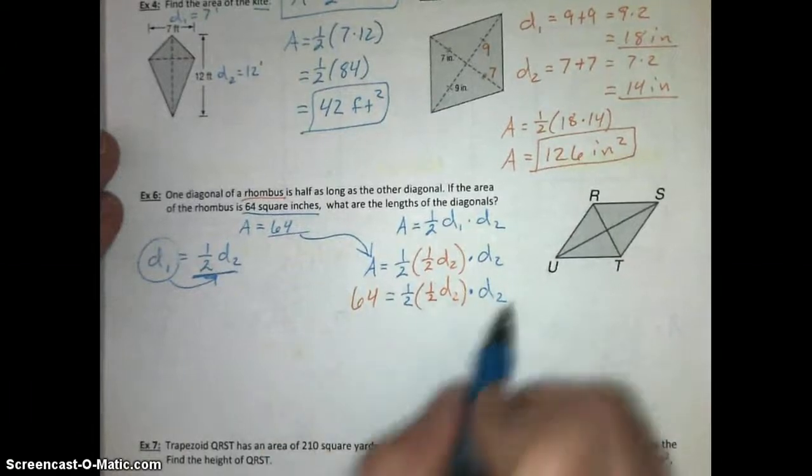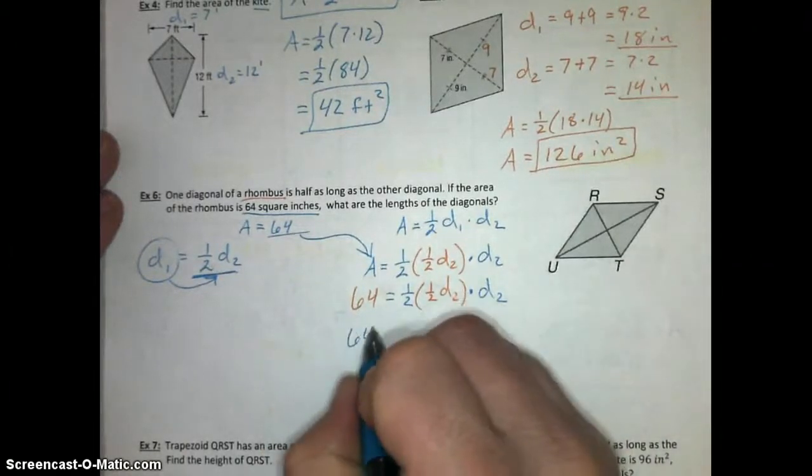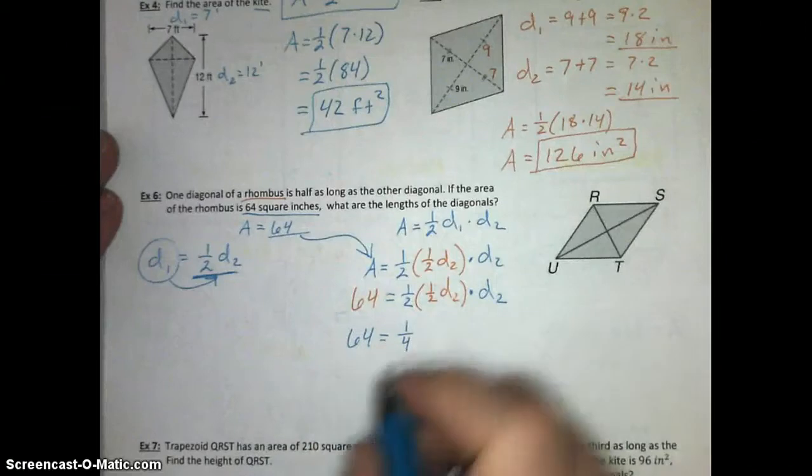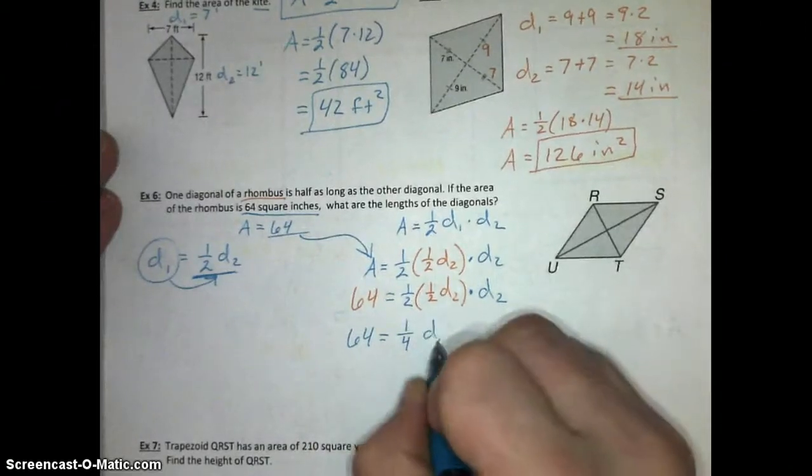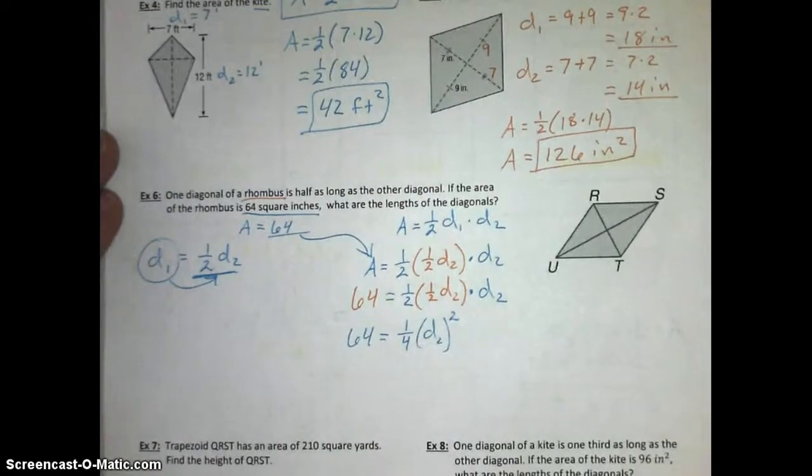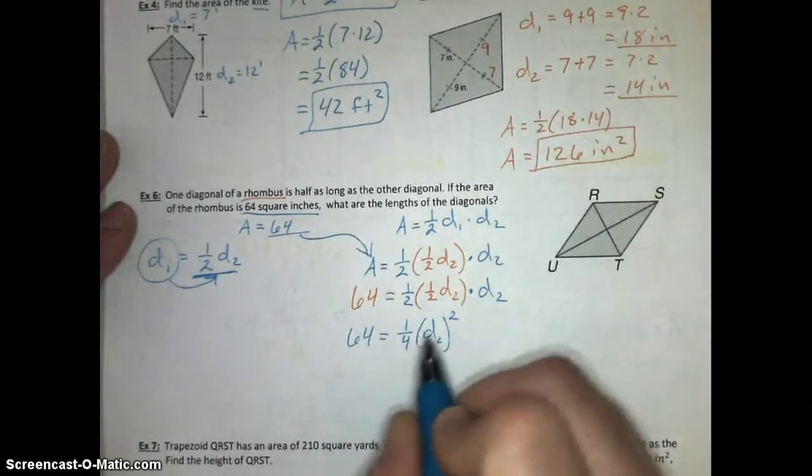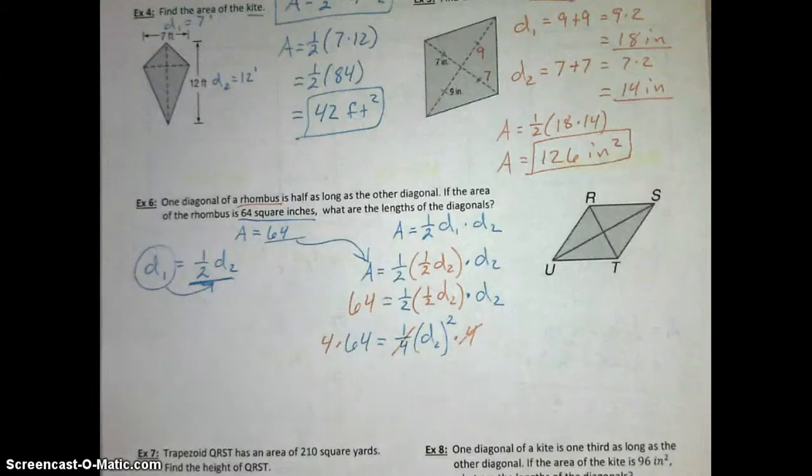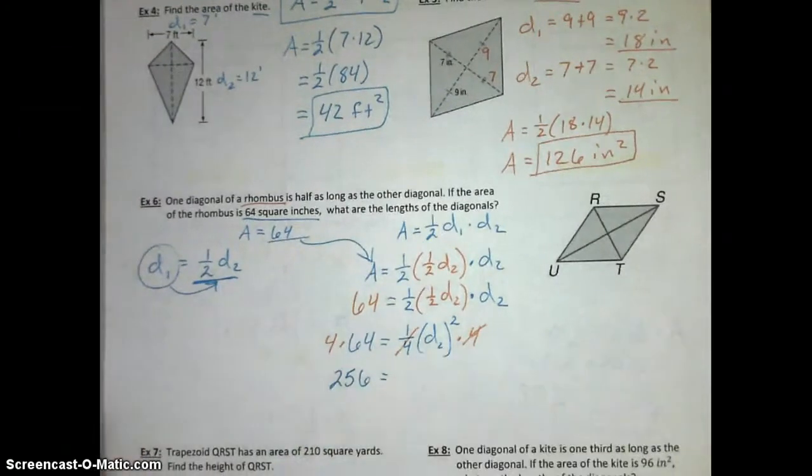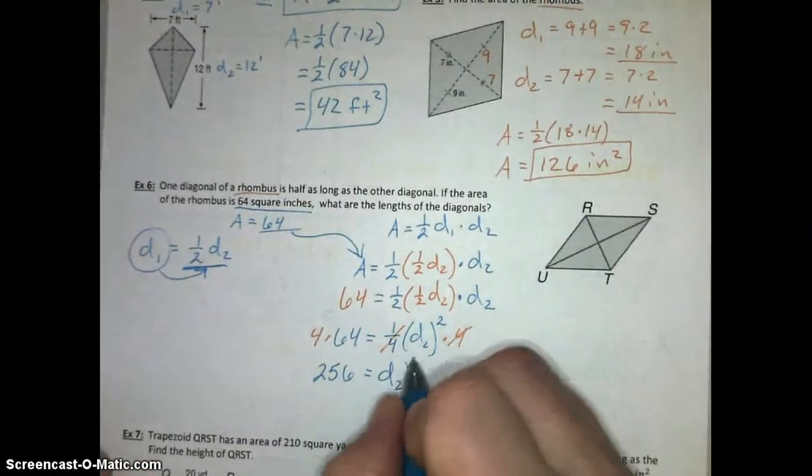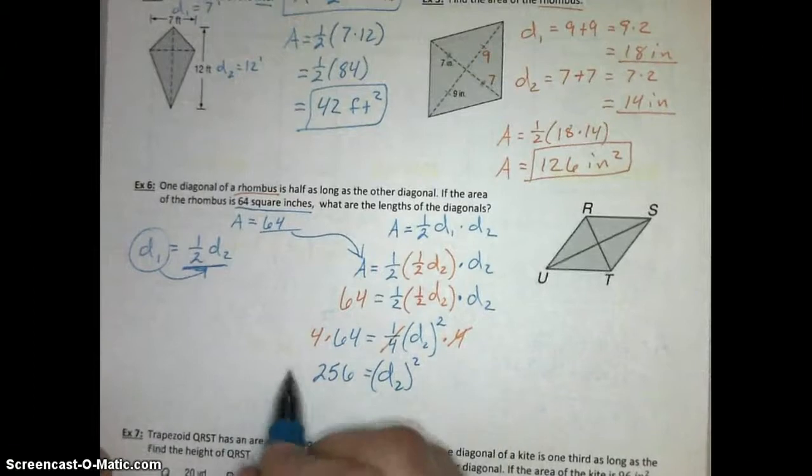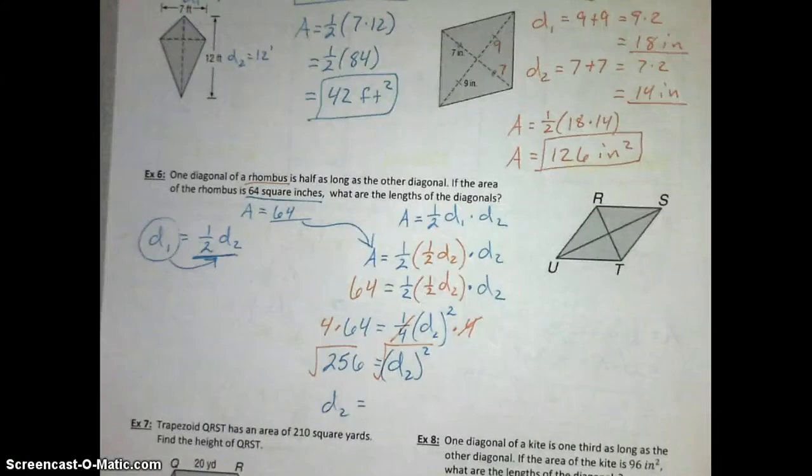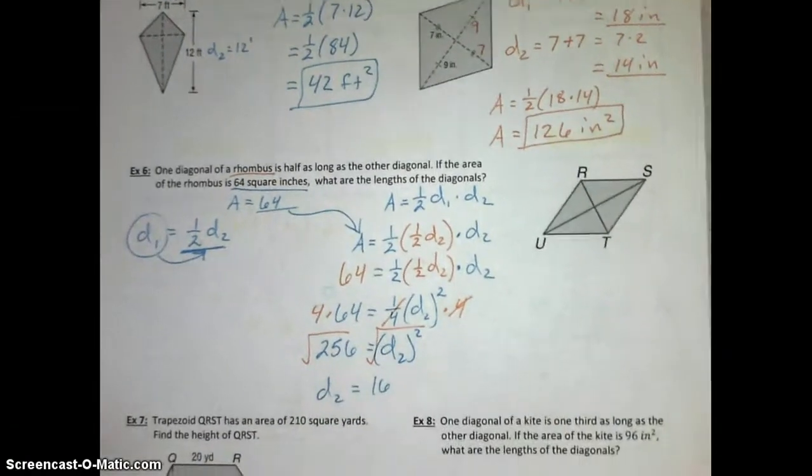We have this formula. All we have to do is simplify it. 64 equals 1 half times 1 half diagonal 2 times diagonal 2. But, the 1 half times 1 half is actually 1 fourth. And, diagonal 2 times diagonal 2 is diagonal 2 squared. So, we just have to solve for diagonal 2. We're going to cancel out the 1 fourth by multiplying both sides by 4. 64 times 4 is 256. And, on this side, we only have diagonal 2 squared. To undo diagonal 2 squared, we're going to take the square root of both sides. So, the diagonal 2 is the square root of 256, which is 16.